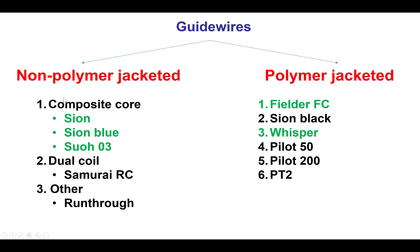In terms of guide wires, it is important to use a new-generation, highly torqueable workhorse guide wire such as the Sion, Sion Blue, and Suoh 03 — which will be discussed in further detail — or the Samurai RC or the Run-Through. But occasionally, polymer-jacketed wires are very useful. Ideally, one uses a non-tapered wire such as the Fielder FC or the Whisper, which allow negotiation through very tortuous coronary segments quite effectively.